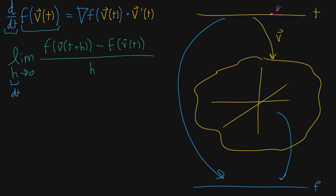You imagine nudging your input by some dt — some tiny change — and that causes a change in the intermediary space of some kind of dv, a change in the vector. The way you think about that is you take the vector-valued derivative and multiply it by dt. It's the proportionality constant between the size of your nudge and the resulting vector. And you might imagine those dt's canceling out as if they were fractions. Then you ask: what does this change dv cause for f? By definition, the resulting nudge to the output space of f is the directional derivative in the direction of whatever your vector nudge is.